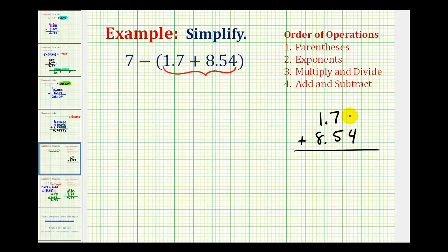And if we want to, we can add a zero here in the hundredths place value, so things line up nicely. And then we need to bring the decimal point down into our sum, and now we'll add. So we have 4, this would be 12, carry a 1, this would be 10.